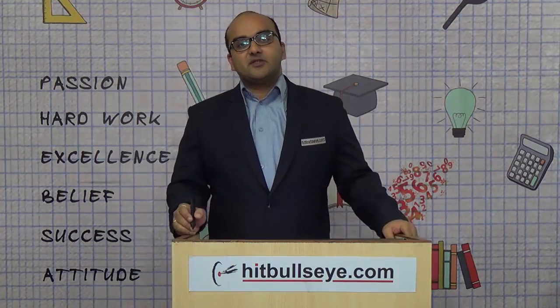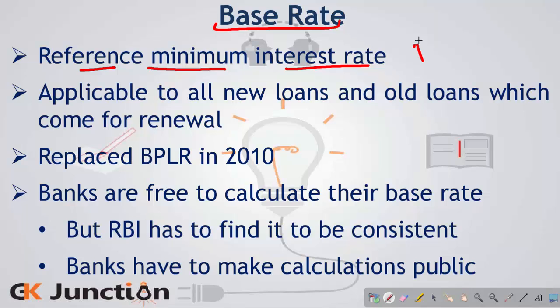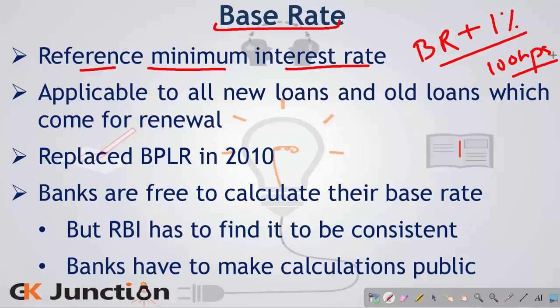For example, if SBI gives a loan to Reliance, it would say the interest rate is base rate plus 1% or 100 basis points. This is the reference rate, and it is the minimum rate — banks cannot give any loans which are below the base rate of the bank.